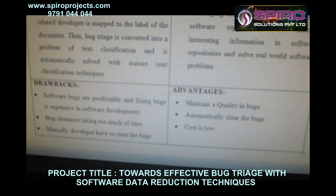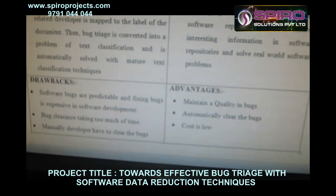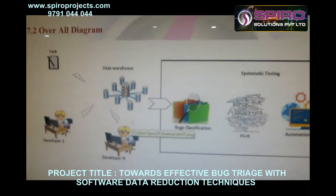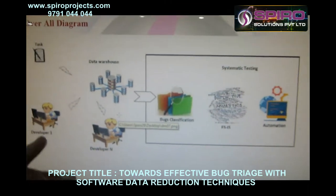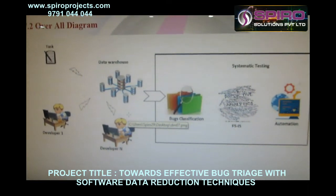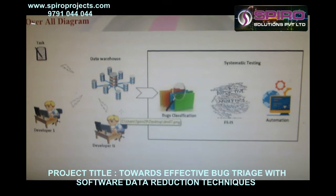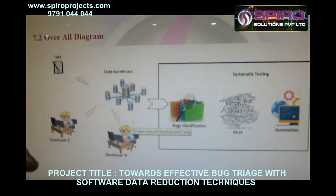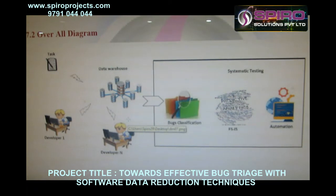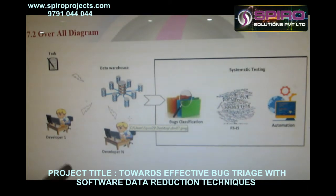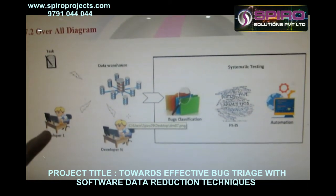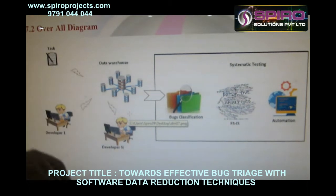Let me move on to the architecture. The system architecture consists of three users: one is developer, one is software tester, and another one is project manager. The project manager initially allocates the task to individual developers, who then submit every task to the data warehouse.